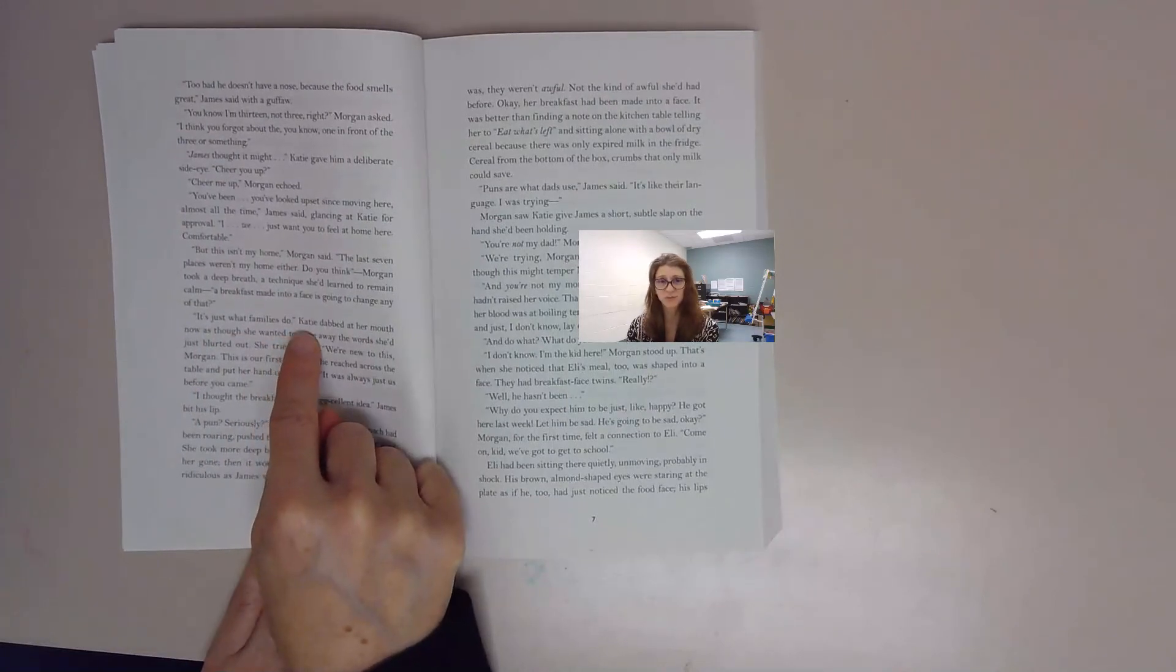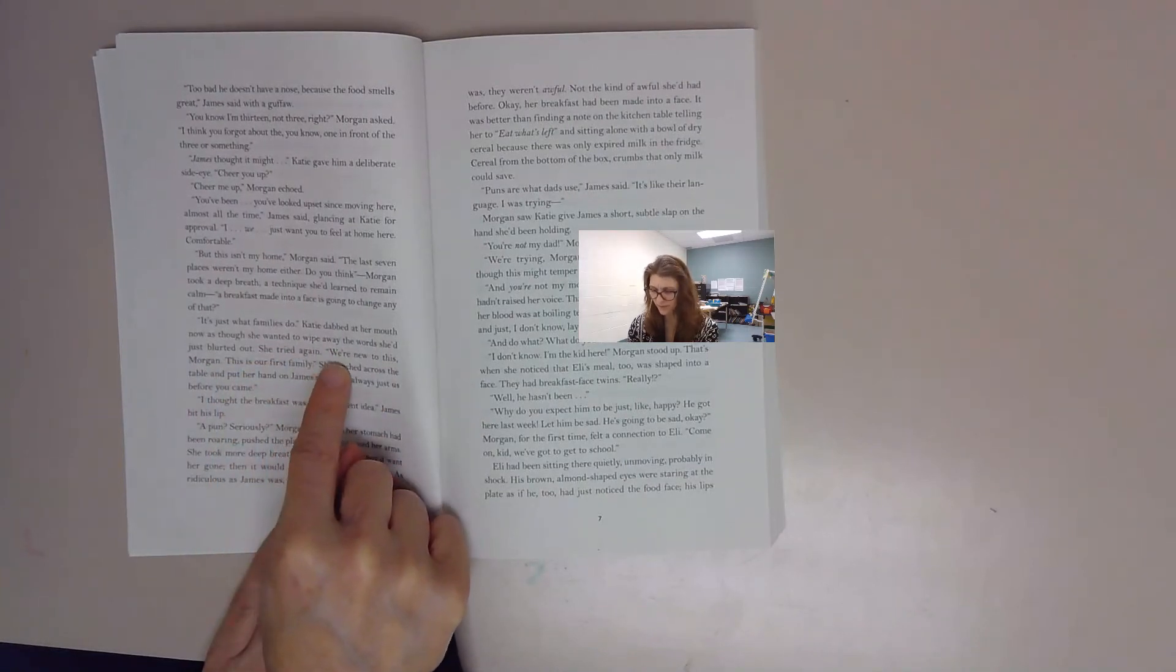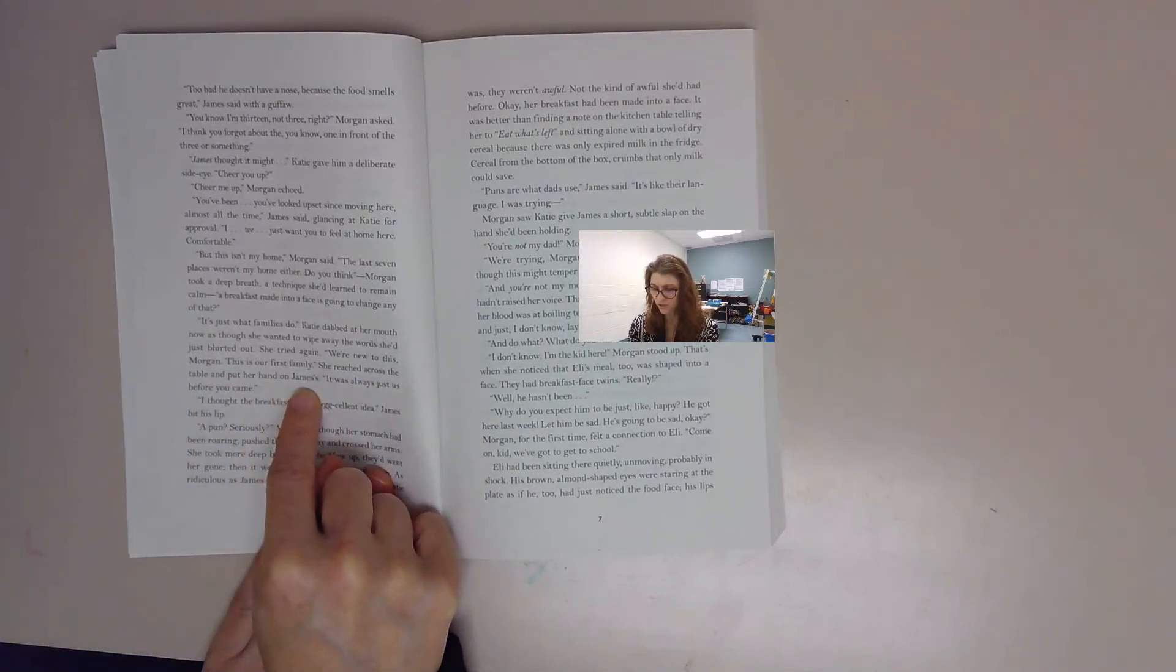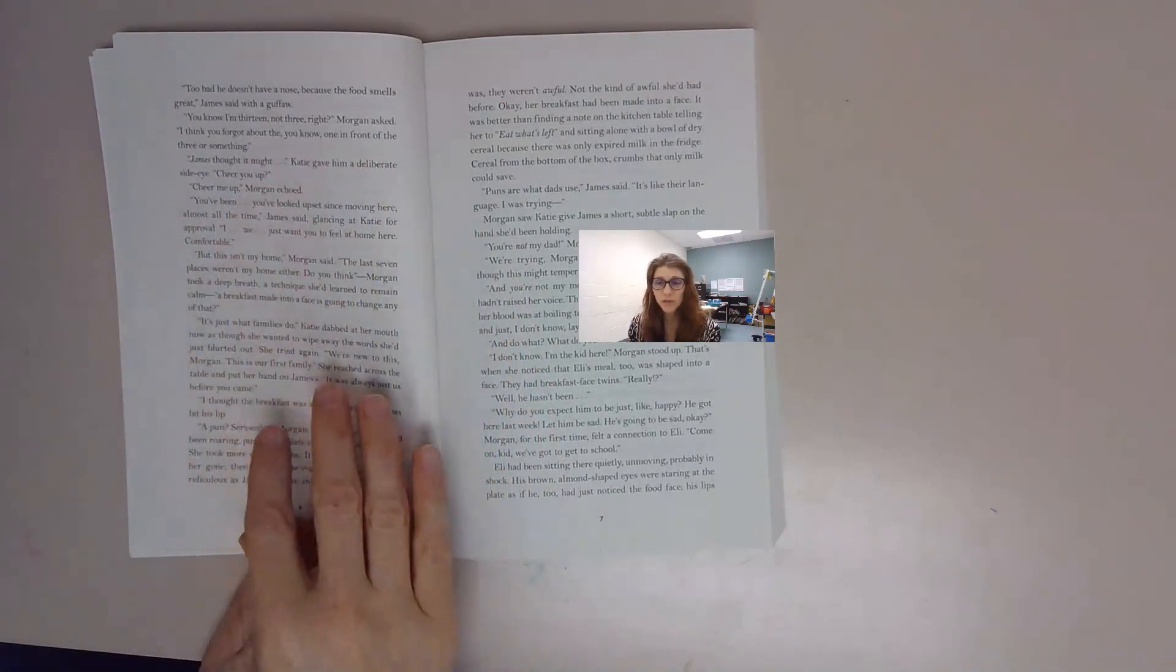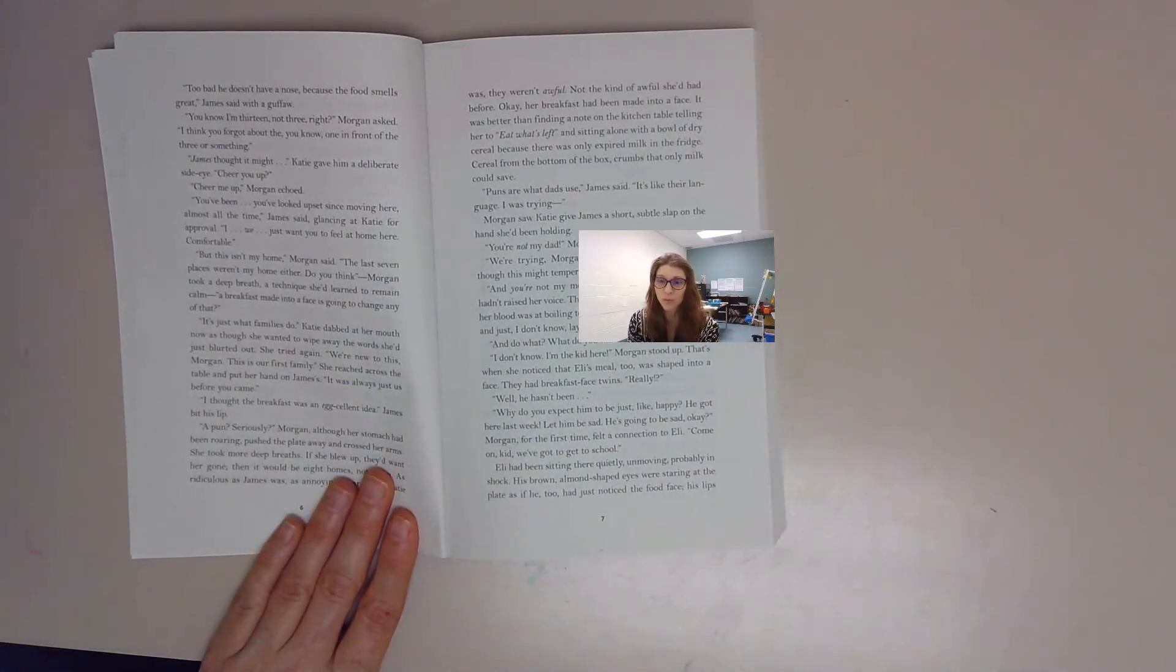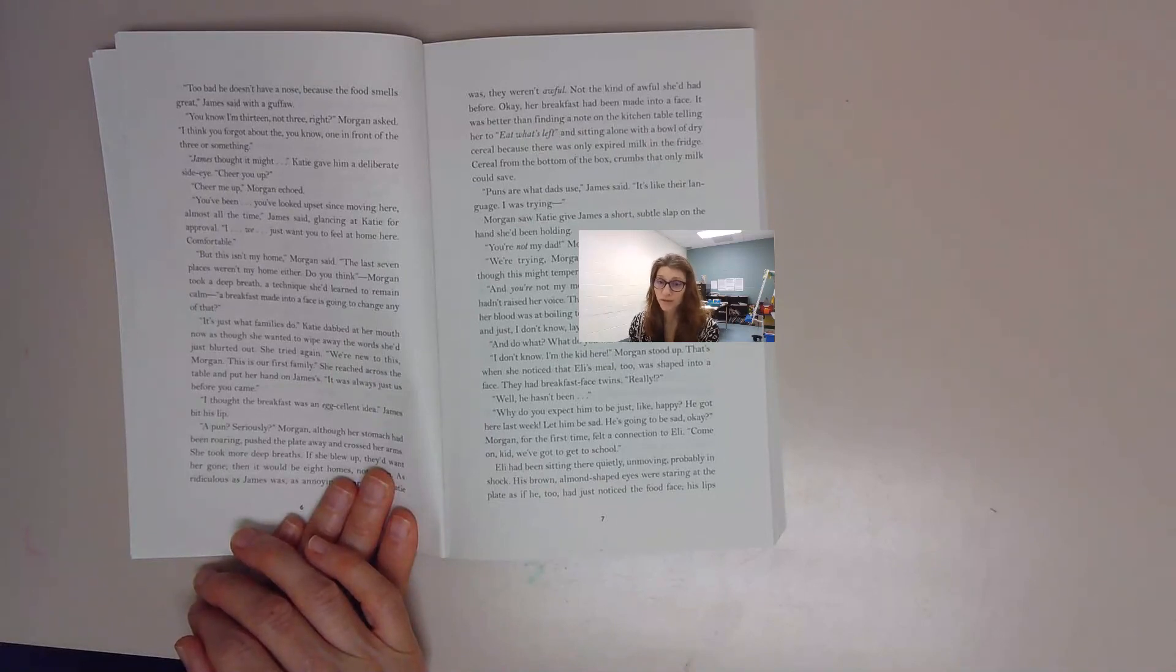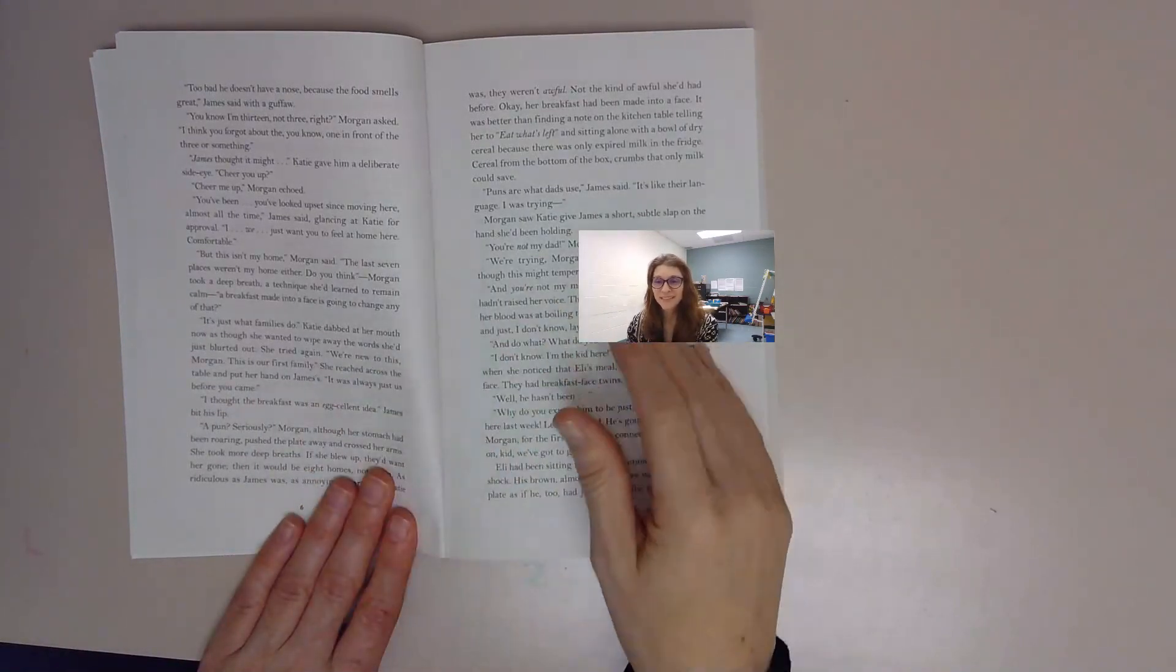It's just what families do. Katie dabbed at her mouth as she thought, as though she wanted to wipe away the words she just blurted out. She tried again. We're new to this, Morgan. This is our first family. She reached across the table and put her hand on James's. It was always just us before you came. So here we see a bit of Morgan and a bit of her anger and hurt of having to live in a foster system, of having to live away from her own home. She says I've been in seven homes in the foster care system. They're not my home. My home is back where I was born, where I was raised when I was a little kid. We see Katie and James trying their very best to make Morgan feel welcome, but it doesn't look like what they're doing is really helping. But we'll see. We'll finish reading the rest of this chapter in the second video.